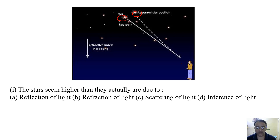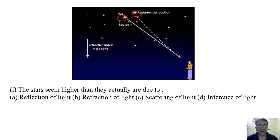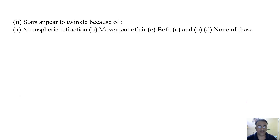The first question is: the stars seem higher than they actually are due to — reflection of light, refraction of light, scattering of light, or interference of light? As already given in the context, the correct answer is refraction of light.